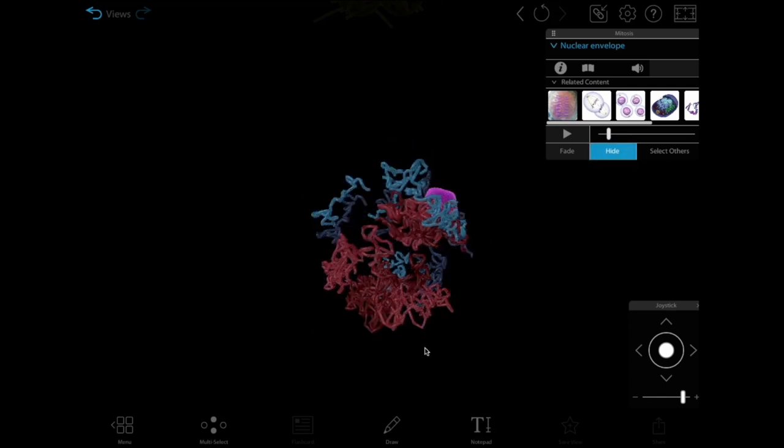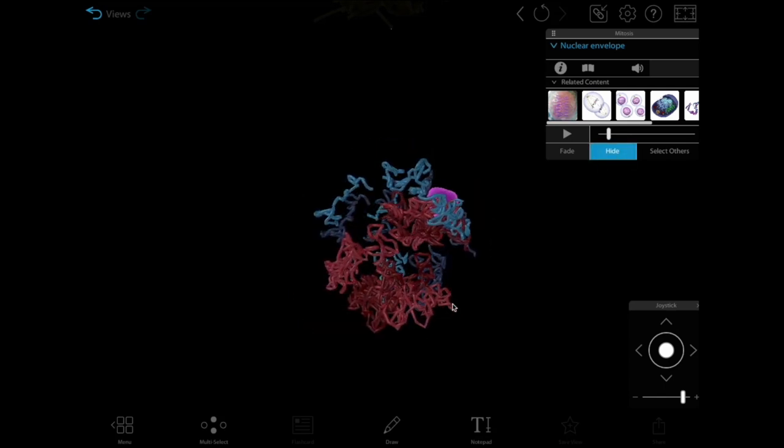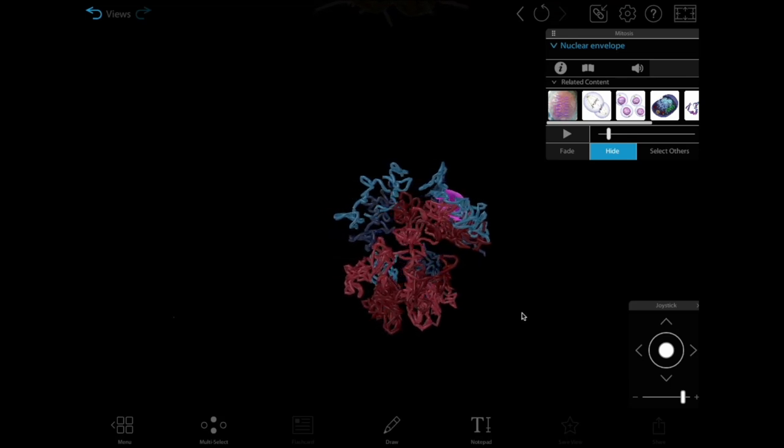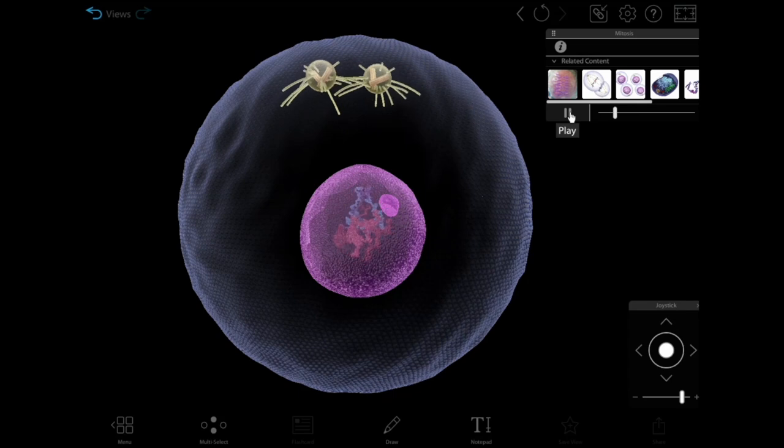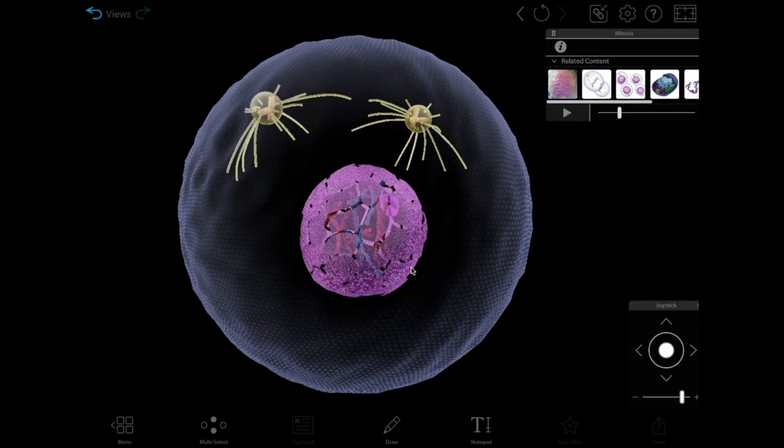In Visible Biology, we represent this using red for the mother's genetic material and blue for the father's genetic material. Now let's see how the different steps of mitosis are illustrated in Visible Biology's moving model.